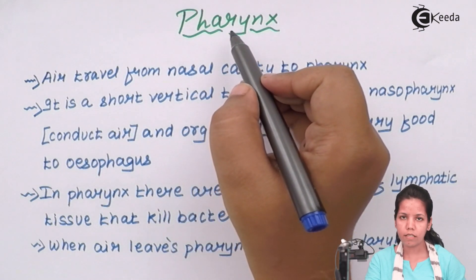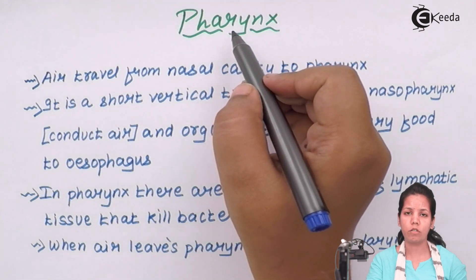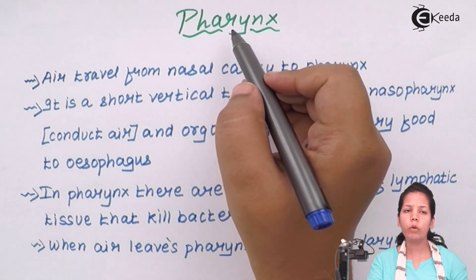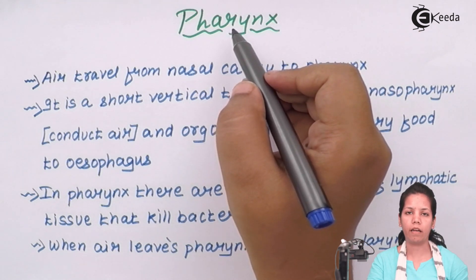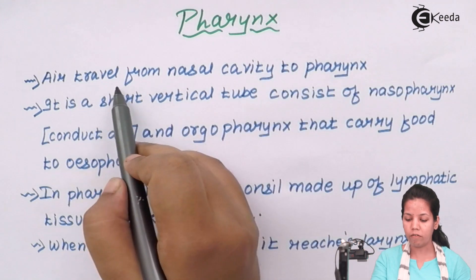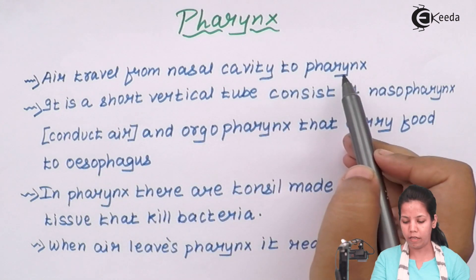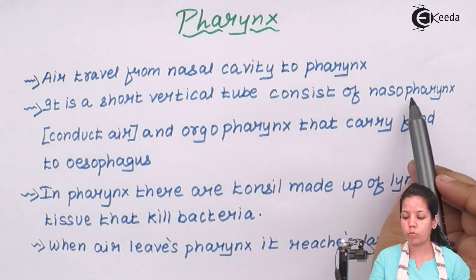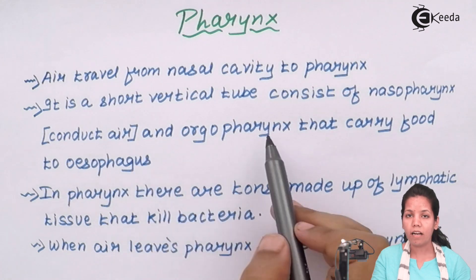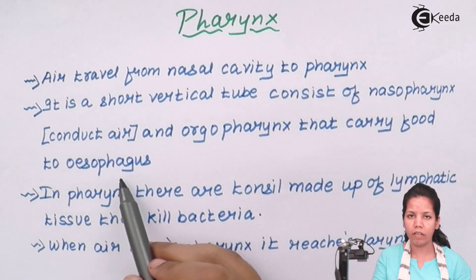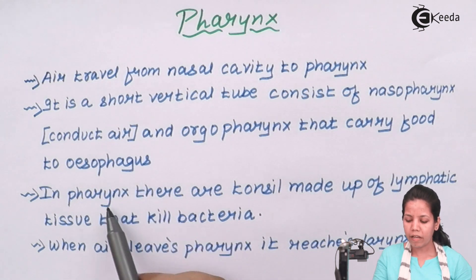Pharynx can be described as a passage just below your nostrils. Whenever you inhale air — which is a mixture of gases — the first place it passes into is the hollow cavity of pharynx. So air travels from your nasal cavity to pharynx. It is a short vertical tube that consists of two regions: nasopharynx that conducts air, and oropharynx that carries food to the esophagus, or the food pipe.